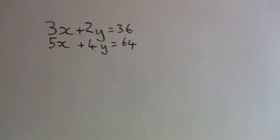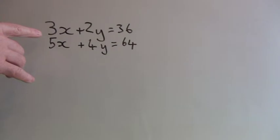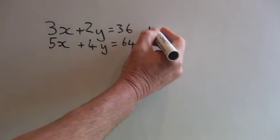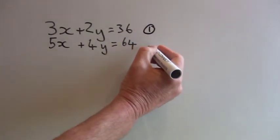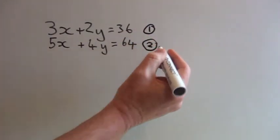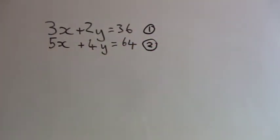Okay, so here we have two equations that we're going to solve simultaneously. Now the first thing we need to do is to label the equations. So I'll label that number one and I'll label this equation number two.